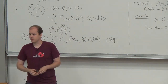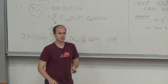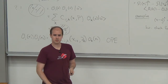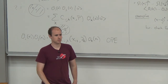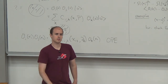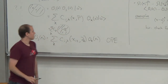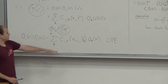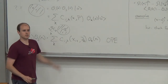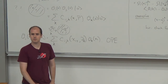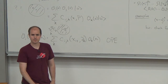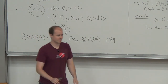The OPE is our main tool for doing computations in conformal field theories. Its key feature is to reduce a correlation function of N operators to a correlation function of N-1 operators, allowing us to actually compute the correlator. Question: are the C coefficients in the OPE the same as the F in the three-point function? Yes, they are very closely related — we'll compute what they actually are next time.